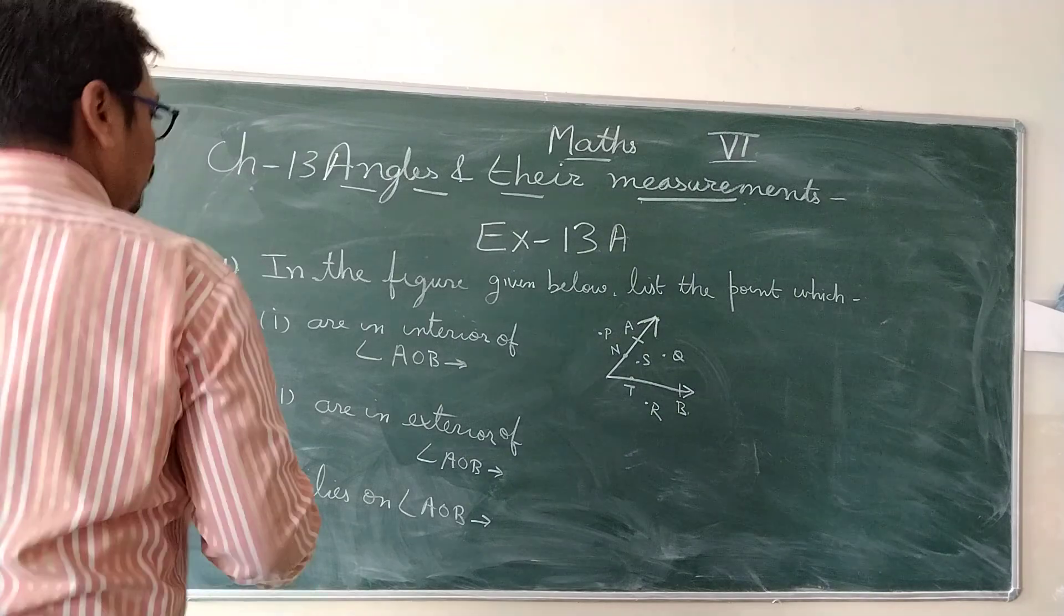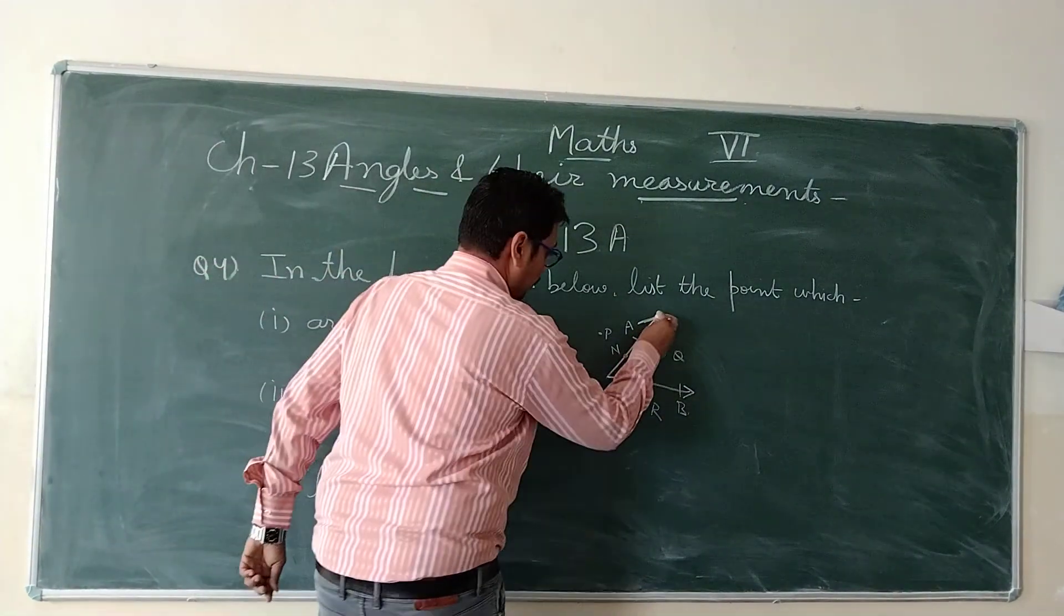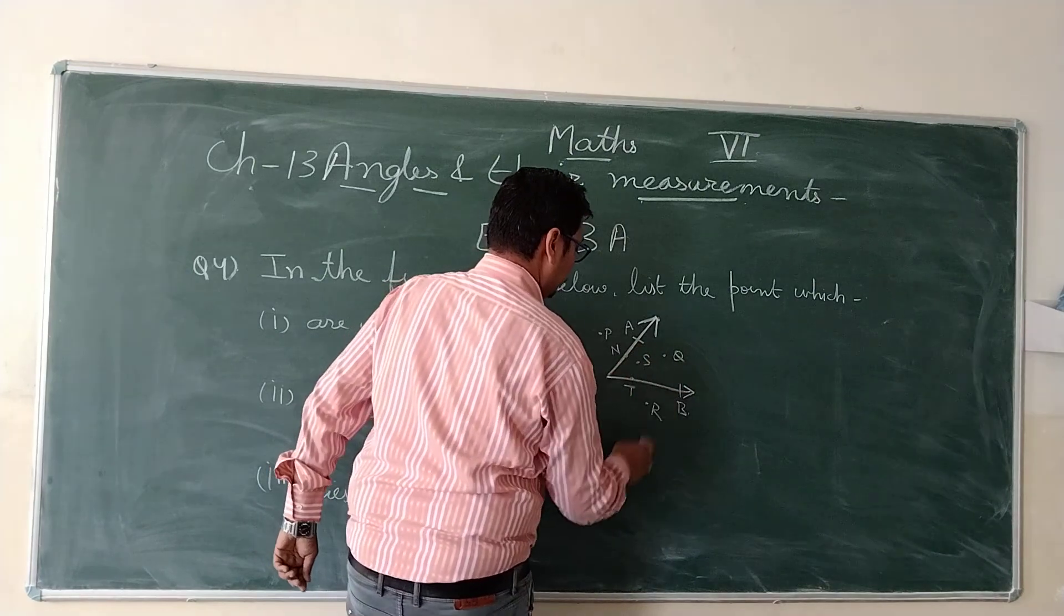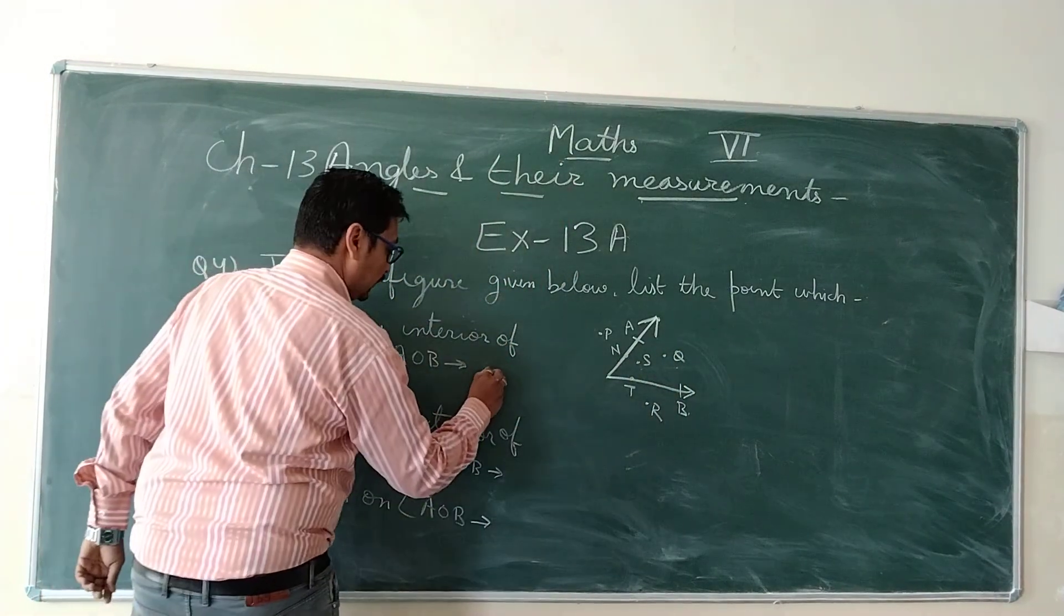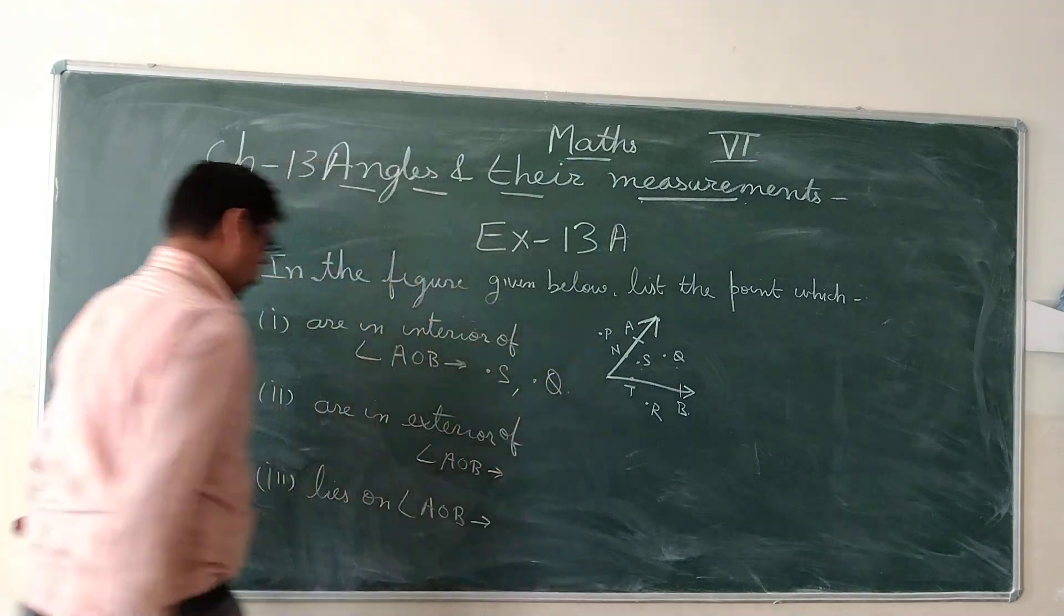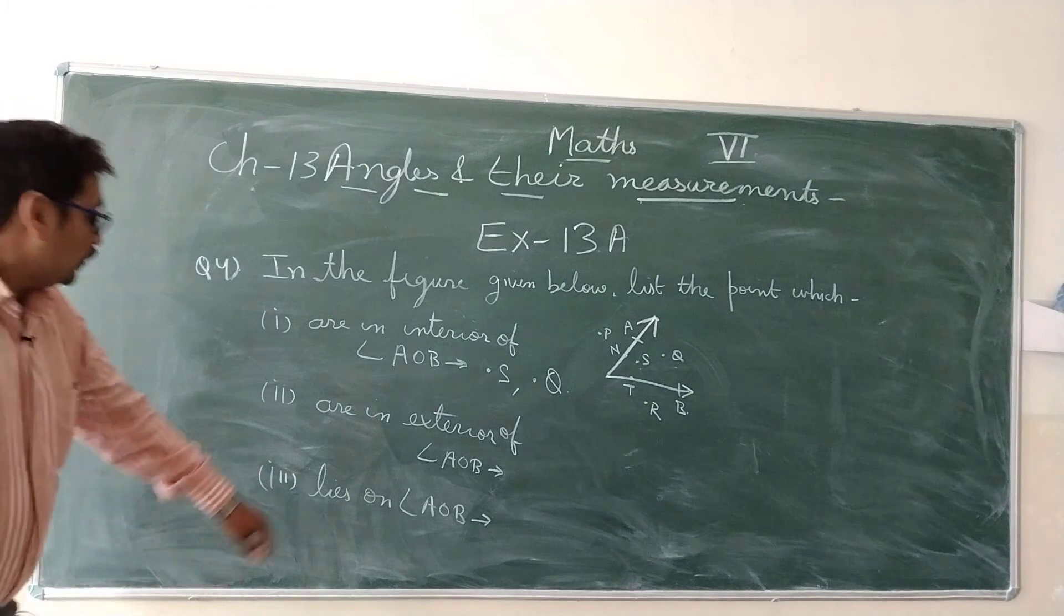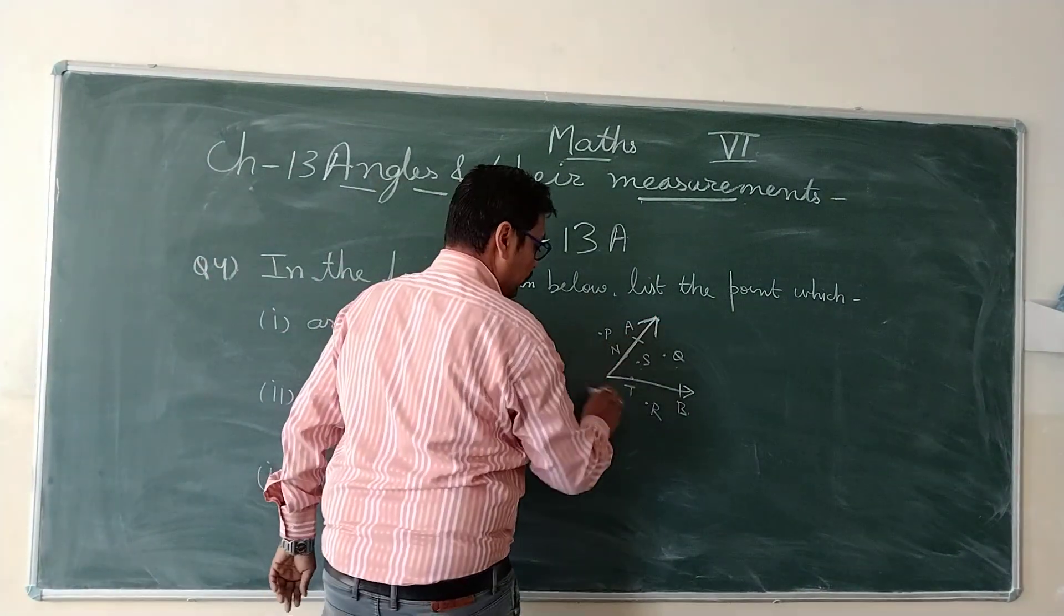In the figure given below, list the points which are in interior of angle AOB. So in this angle AOB, we can see point S and point Q lies inside. So they are point S and point Q are in exterior of angle AOB.